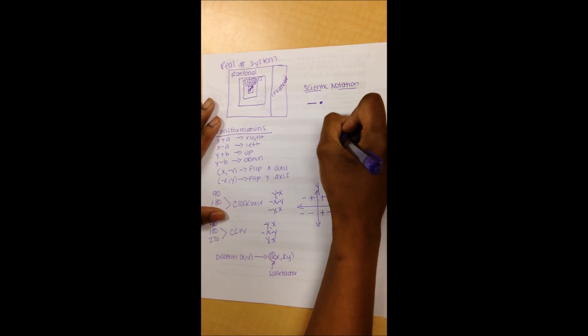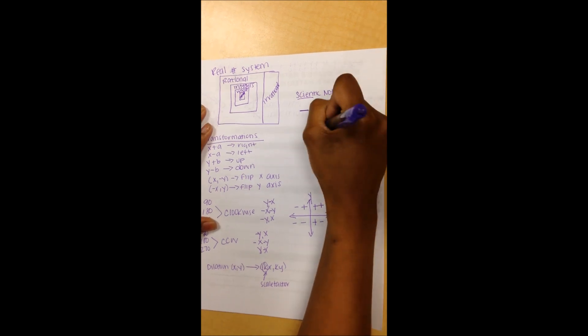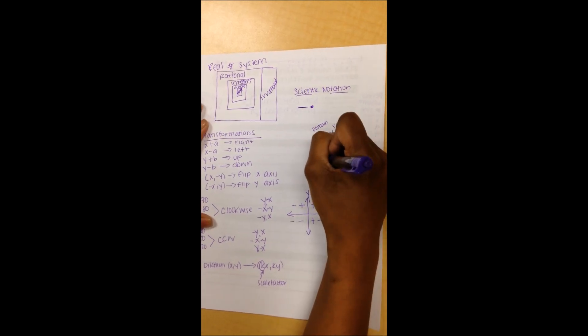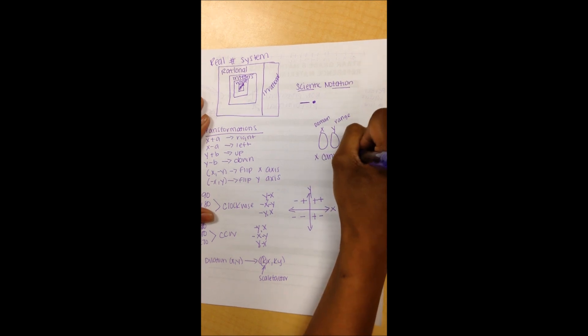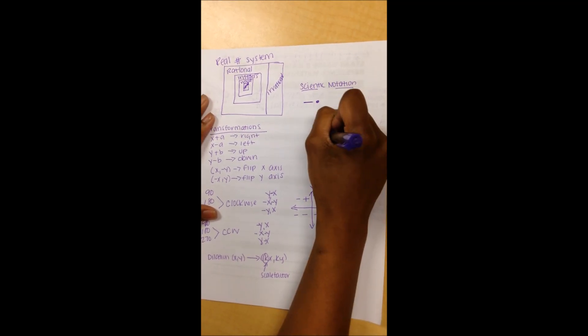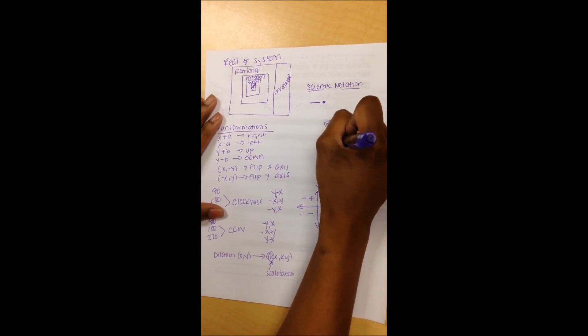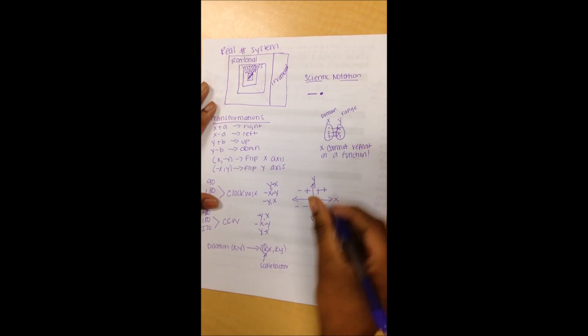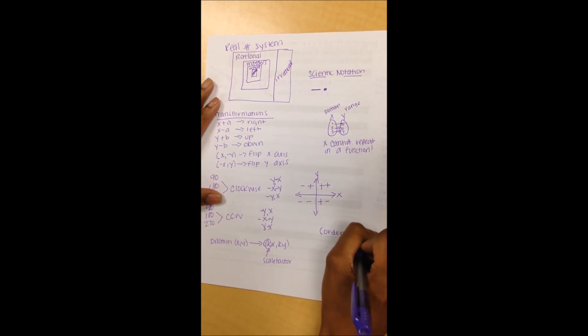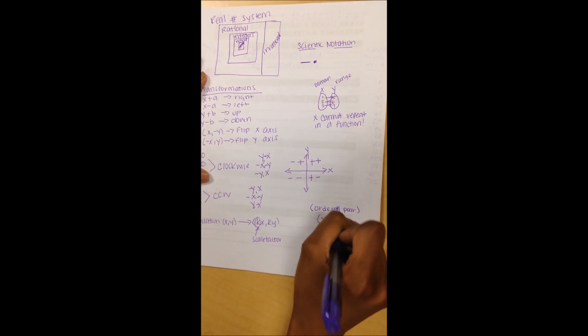Also, it might be a good idea when you're talking about a function to maybe draw a sample mapping. This is x, this is y or the value. So this is domain, this is range. Also remember an ordered pair is written x comma y. Your x value always comes first and your y value comes second.